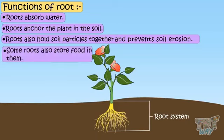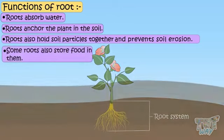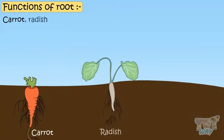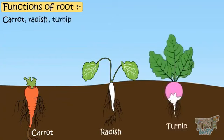Some roots also store food in them, like carrots, radish and turnips, are tap roots that we eat.